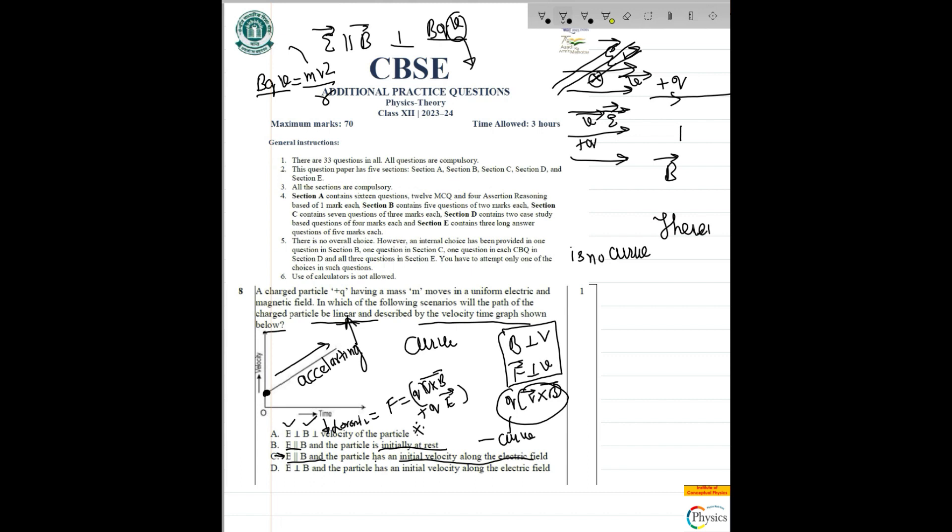If E is parallel to B and the particle has an initial velocity along the electric field. So if this was an electric field and the velocity is along the direction of electric field, both are parallel. And the body will accelerate, it's a positive charge, so it is bound to accelerate. This is a positive charge, it will move from a position of higher potential to lower potential.